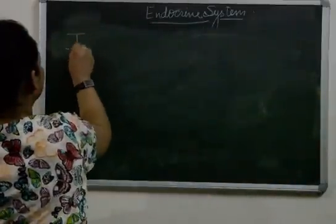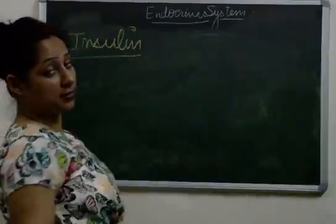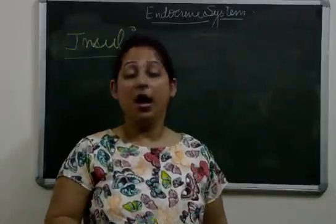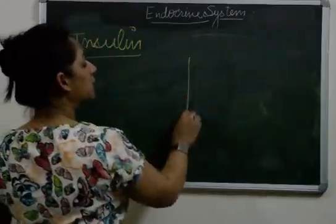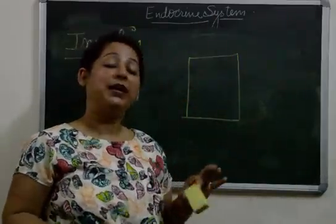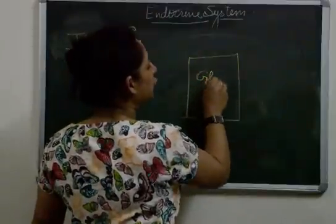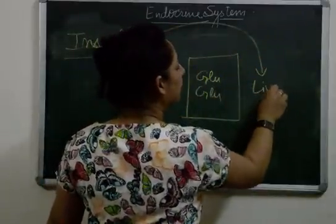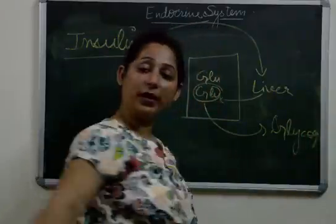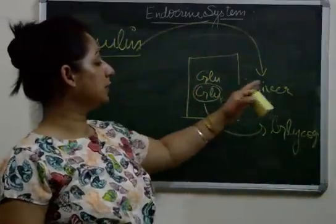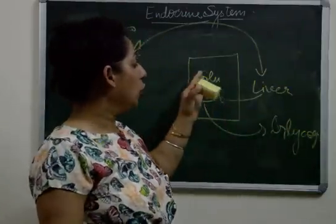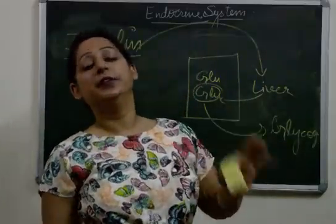Most of you must have heard about insulin. In one line, insulin is the hormone that regulates the sugar level of the body. When we eat food, glucose enters our body and blood sugar levels rise. Normal insulin secretion causes the liver to convert excess glucose into glycogen, thereby maintaining a proper sugar level. This conversion of excess glucose into glycogen, stimulated by insulin, is how insulin regulates blood sugar.